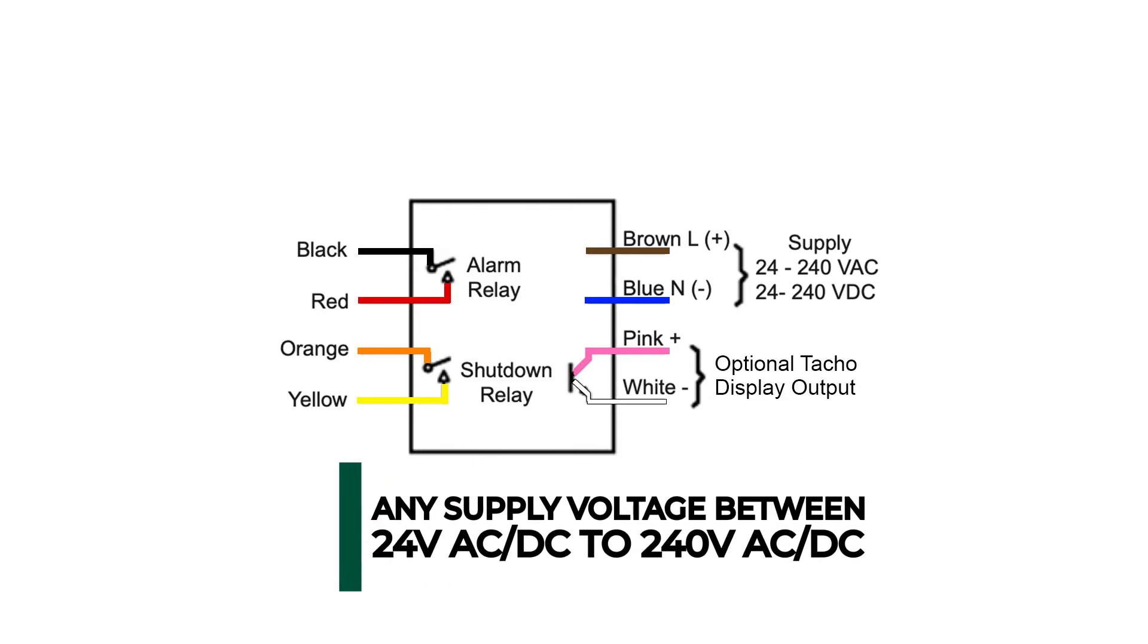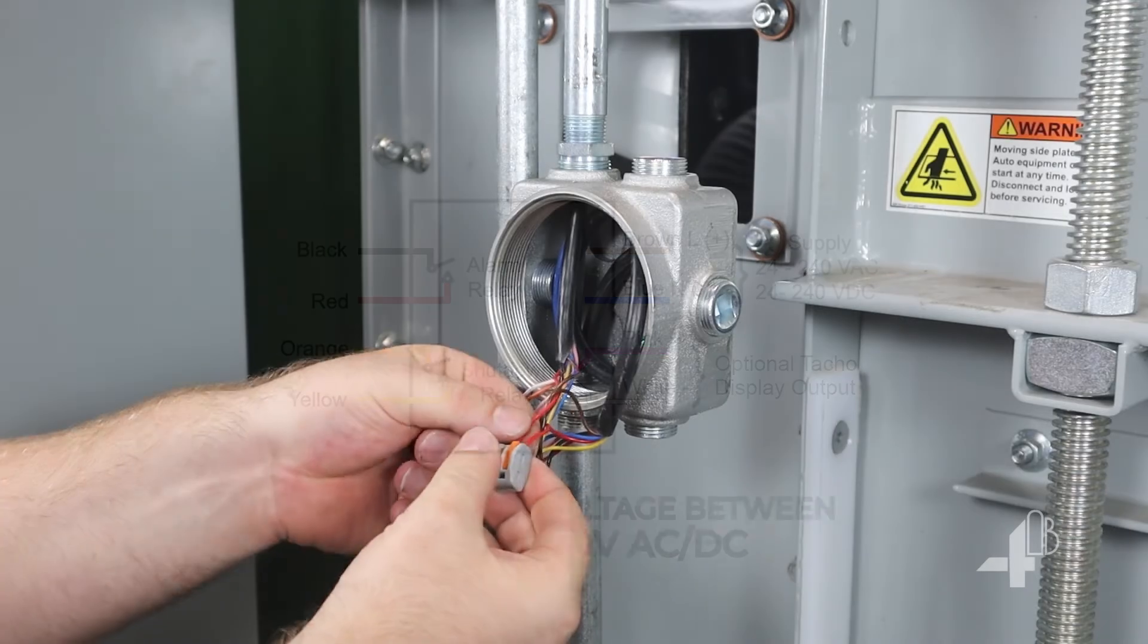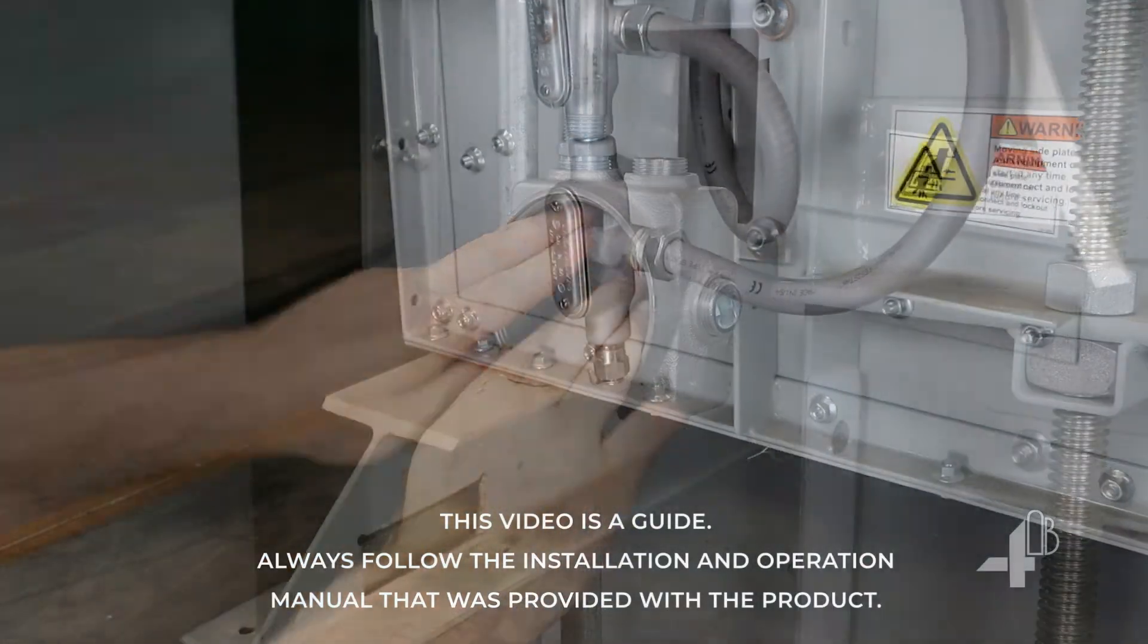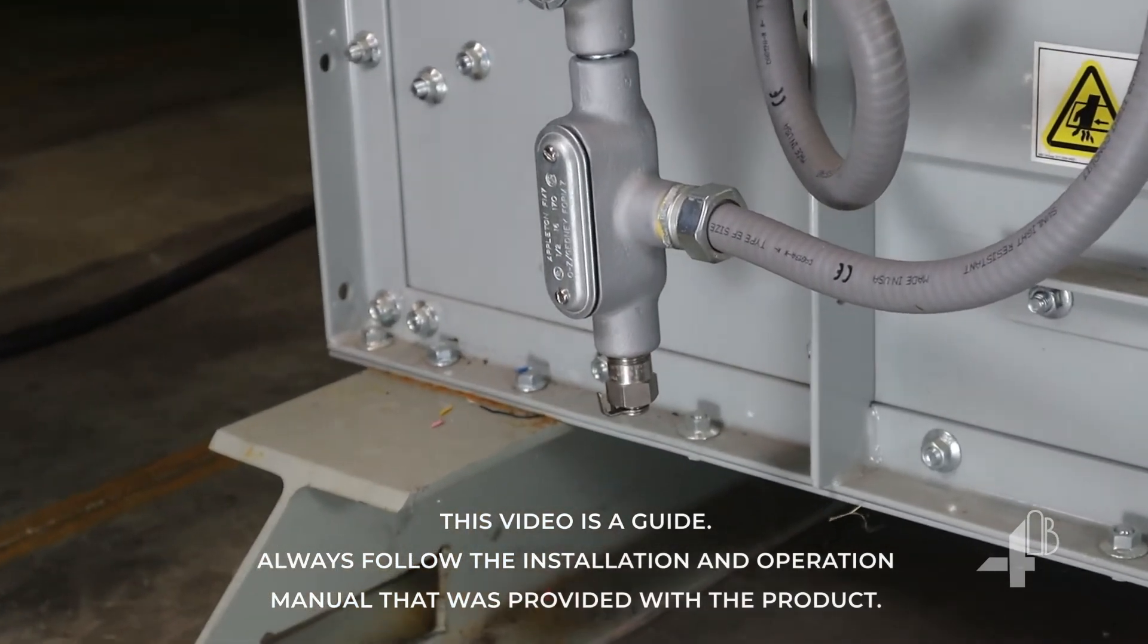The supply power can be 24 to 240 volt AC or DC. Most applications use a flexible seal tight and rigid conduit to protect the cable. Use a low point conduit drain in case any moisture accumulates in the piping.